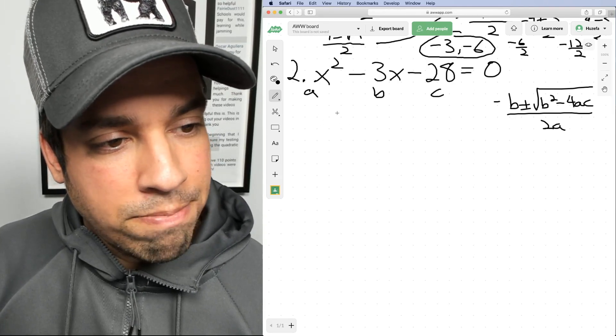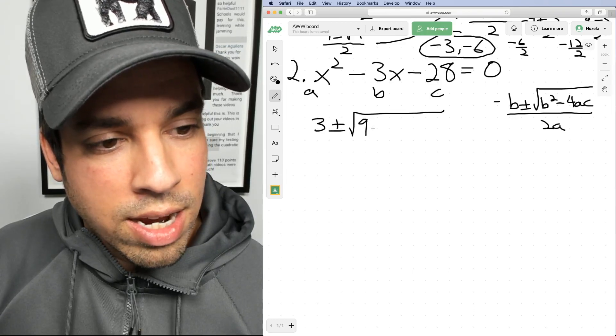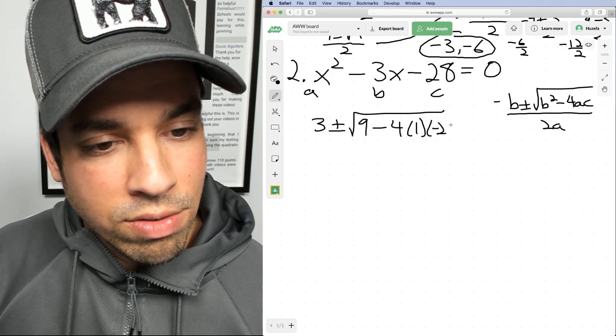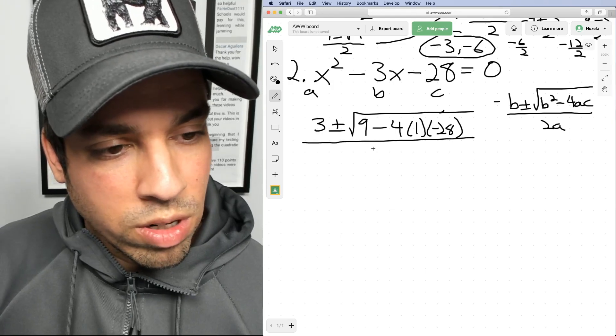So I got negative B, which is positive three, plus or minus square root of B squared, which is nine minus four times A is one, and C is negative 28 over two A and A is one. So two times one is two.